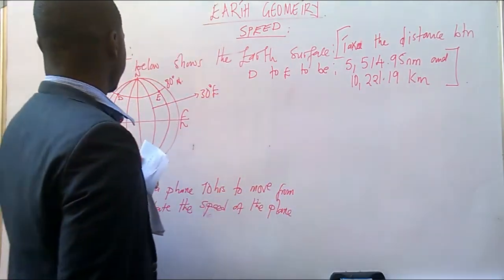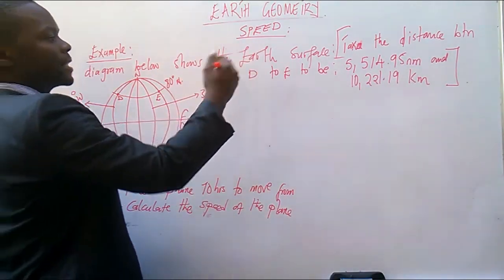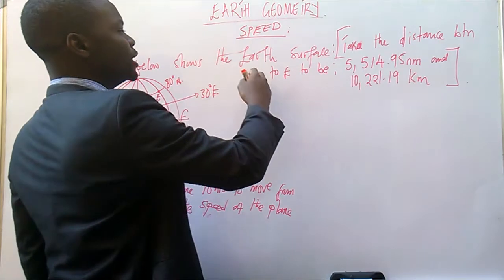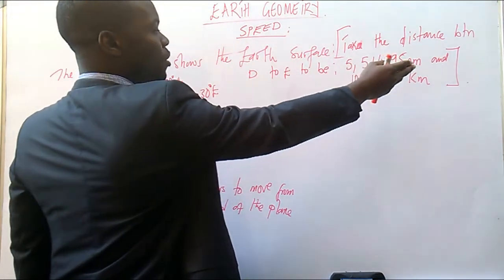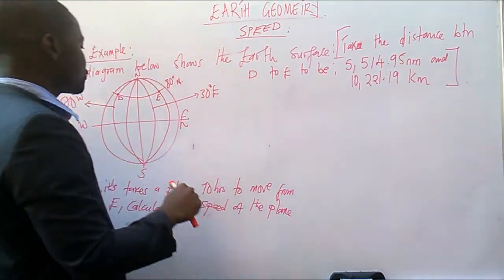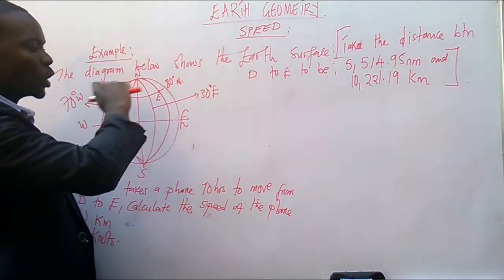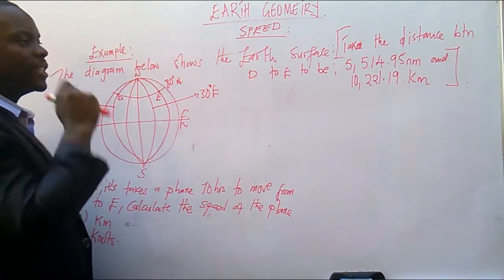So the example is saying that the diagram below shows the Earth surface. Take the distance between D to E to be, this is not come out, and this is in kilometers. So I've got D and E, this is the group there.